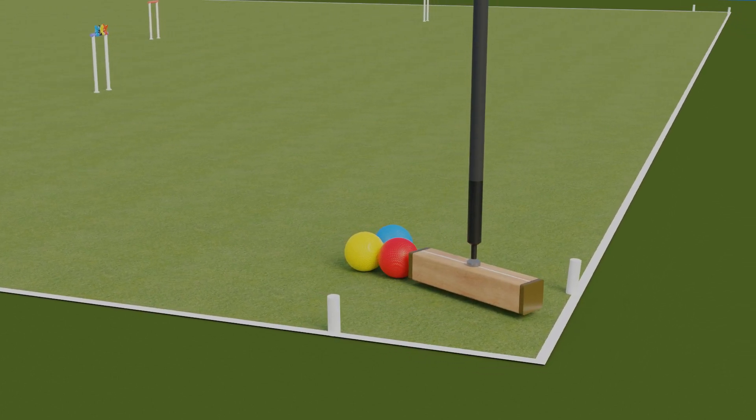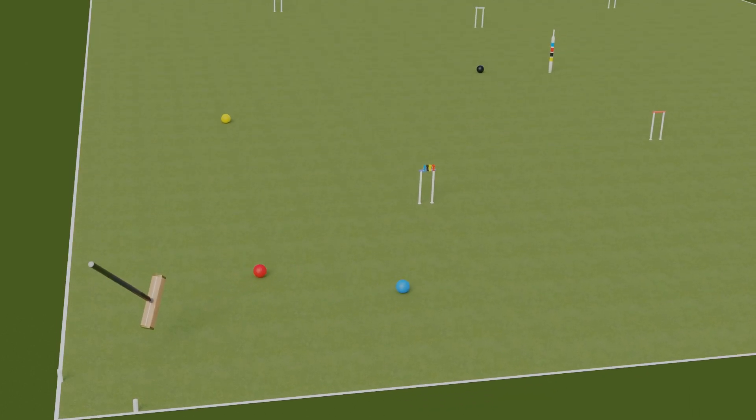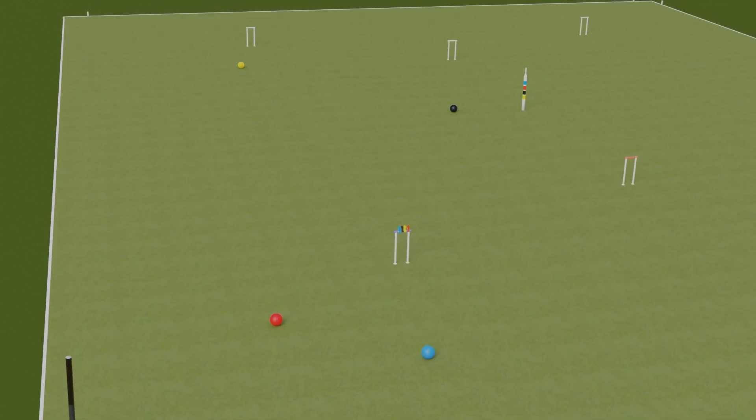The purpose of the shot is to move two balls at once to better positions on the lawn, perhaps off a yard line or out of a corner.